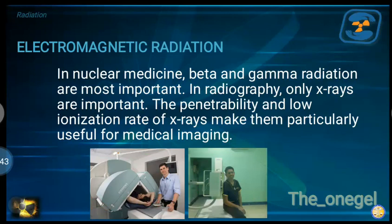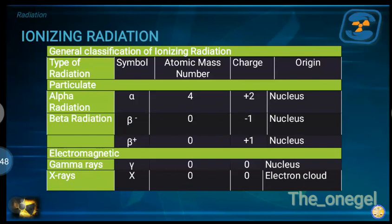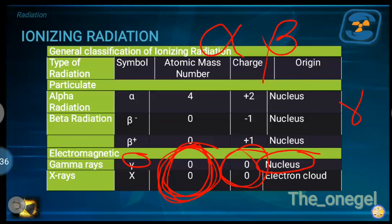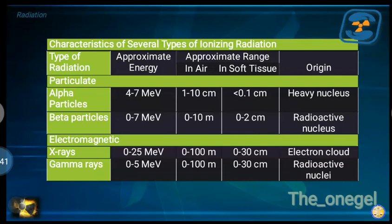Summarizing the four types of radiation discussed — two from particulate radiation and two from electromagnetic radiation. For electromagnetic radiation (gamma and x-ray), atomic mass is zero and charge is zero, since they are energy disturbances, not particles. Gamma originates from the nucleus, whereas x-ray originates from the electron cloud. Approximate energy: x-ray is 0 to 25 mega electron volts depending on the application (diagnostic, orthovoltage, megavoltage), and gamma ray is 0 to 5 mega electron volts.